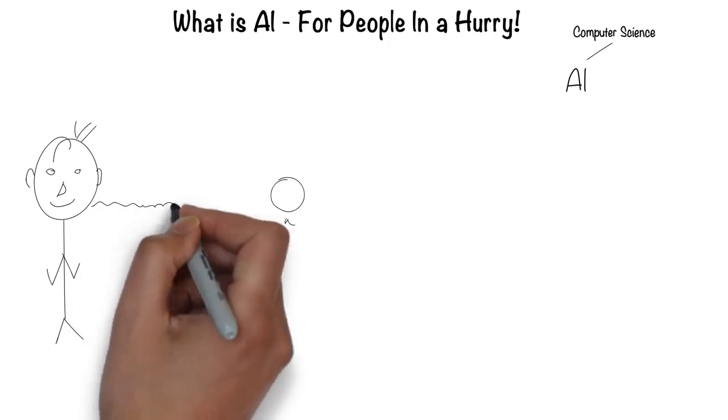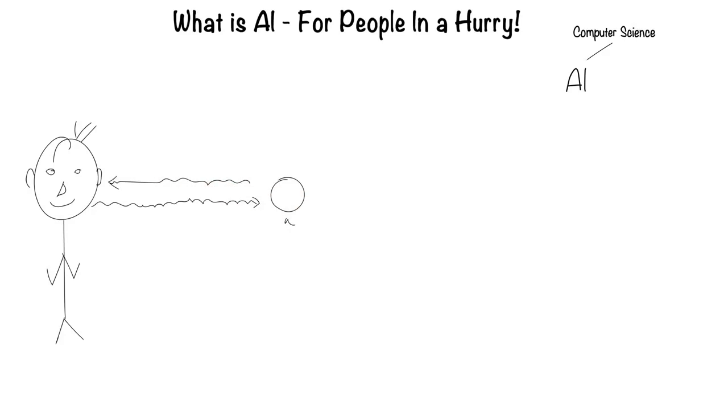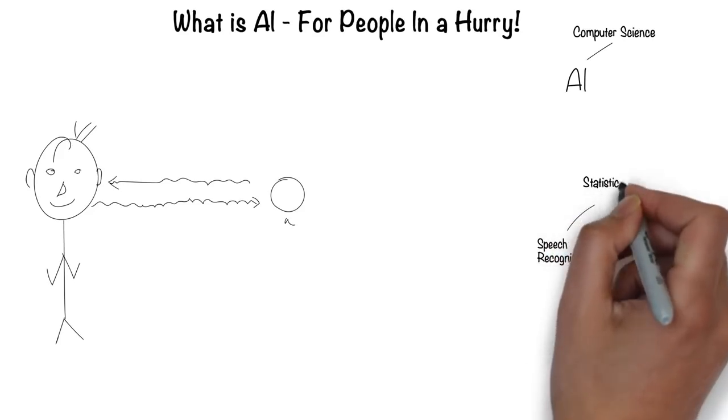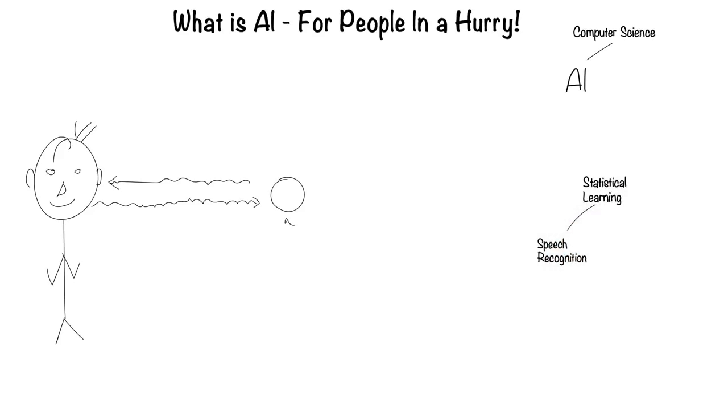Humans can speak and listen to communicate through language. This is the field of speech recognition. Much of speech recognition is statistically based, hence it's called statistical learning.